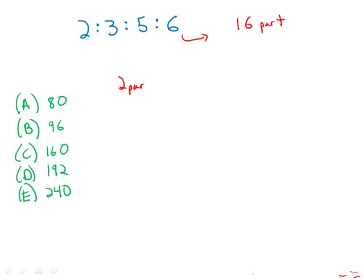Suppose that two parts equals 30 hours. Suppose that's the person who worked 30 hours. Well, then one part would equal 15, and 16 parts, 16 times 15 is 240. So that's a possibility.